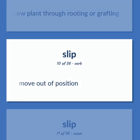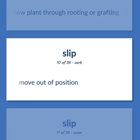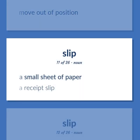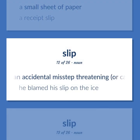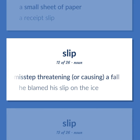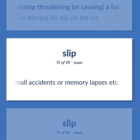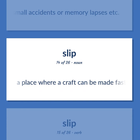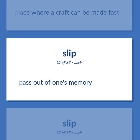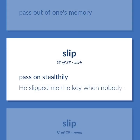Move out of position. A small sheet of paper. A receipt slip. An accidental misstep threatening, or causing, a fall. He blamed his slip on the ice. A minor inadvertent mistake usually observed in speech or writing or in small accidents or memory lapses. A place where craft can be made fast. Pass out of one's memory. Pass on stealthily. He slipped me the key when nobody was looking.